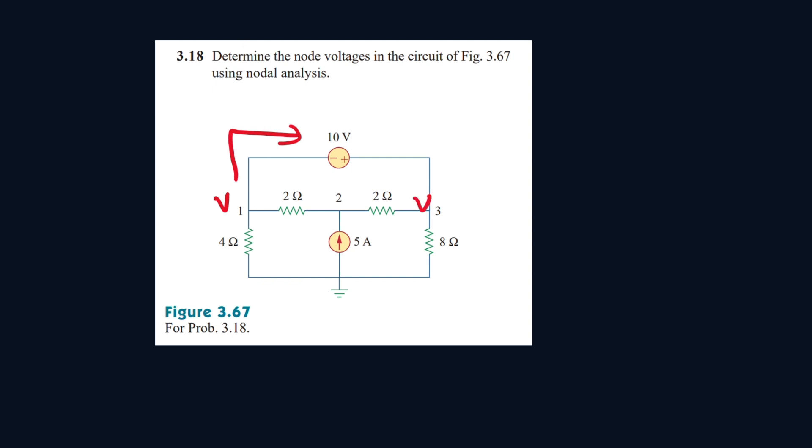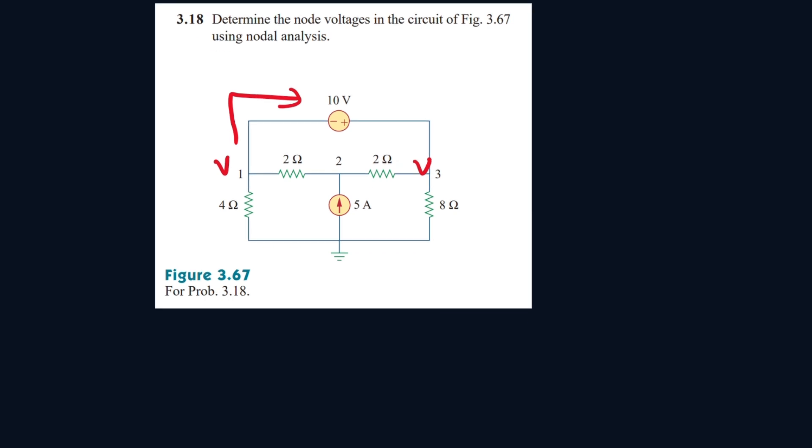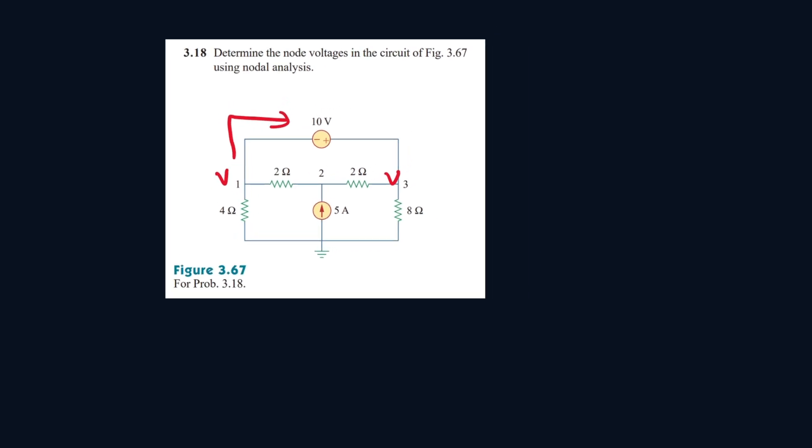An equation we can write is that while V1 passes through the 10 volt source, as it leaves this positive terminal, it increases by 10 volts. That means V3 will be equal to V1 plus 10. So we can write our first equation down: V1 plus 10 is equal to V3.